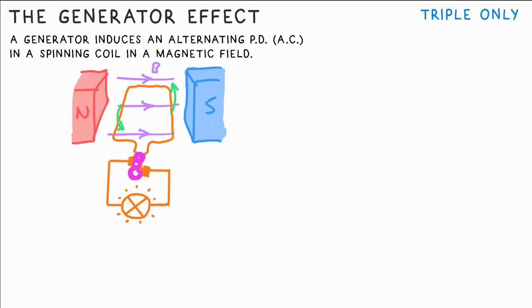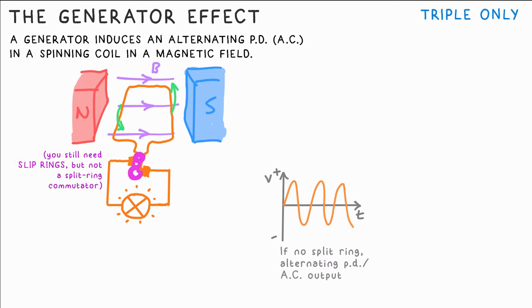A generator itself looks like a motor. You turn the coil and a potential will be induced in the coil. This is basically how power stations work. The steam made from burning fuels or nuclear fission turns the turbine which turns this coil. As you can see we don't need a split ring commutator. It still works.